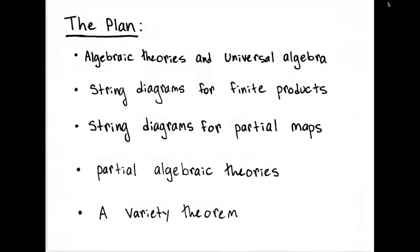This talk is about partial universal algebra — the syntax and semantics of algebraic theories where the operations are partial instead of total. To get there, we'll start by talking about algebraic theories and universal algebra in the classical sense — things like groups, rings, and monoids — which turns out to have a lot to do with categories with finite products.